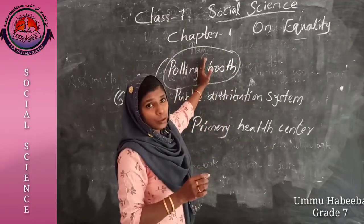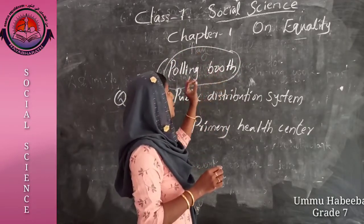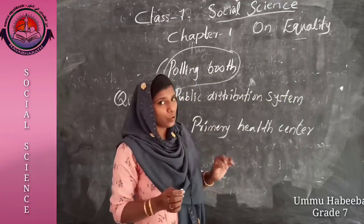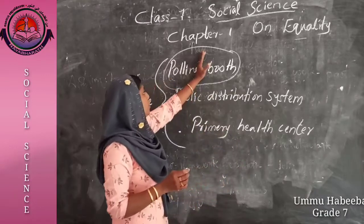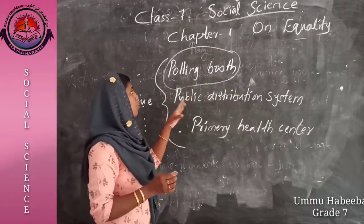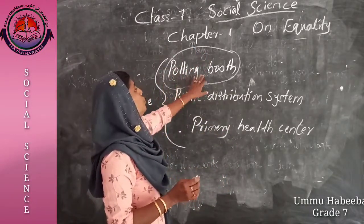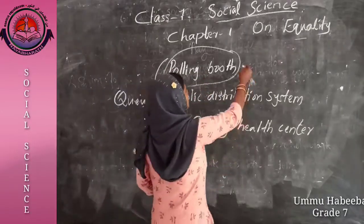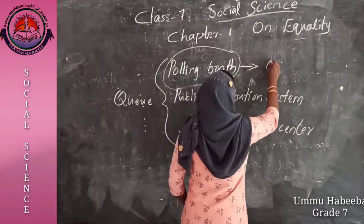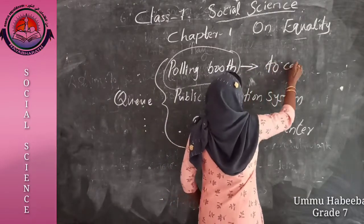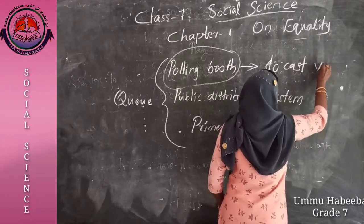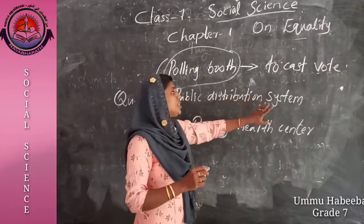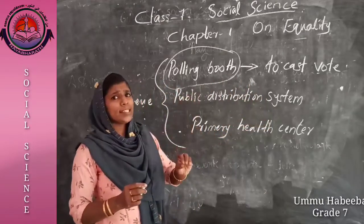The first location is a polling booth. A polling booth is a place that provides the conveniences or settings for an election process. The people in front of the polling booth are waiting to cast their vote — that is their aim.